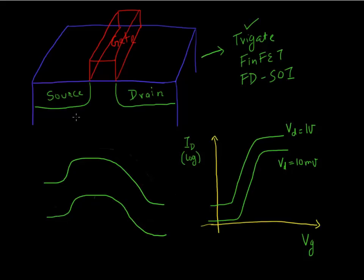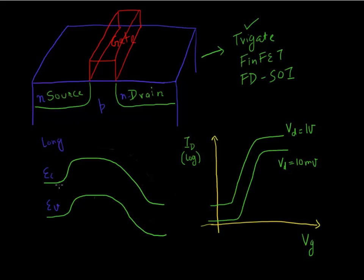This schematic shows a conventional planar transistor where the source, the channel, and the drain are in the same plane. Drawn here is the band diagram showing the conduction and the valence band of a long channel transistor device, assuming it's an N-MOSFET device with an N source, drain region, and a P channel.